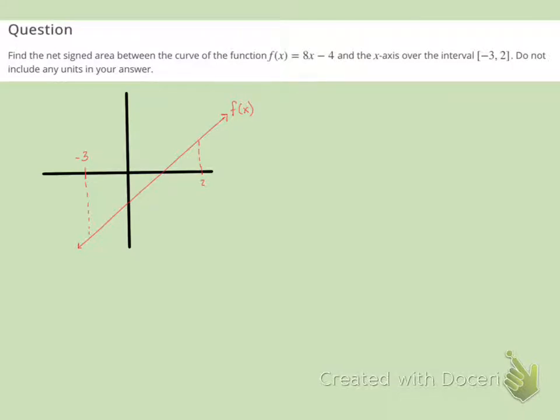So notice it says find the net signed area. So unlike the previous practice problem, in this one I'm going to make sure that I keep any negatives that I have.